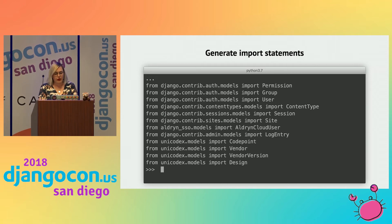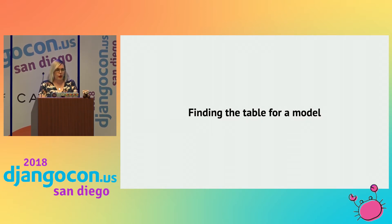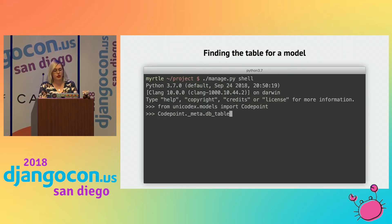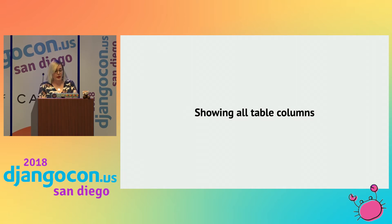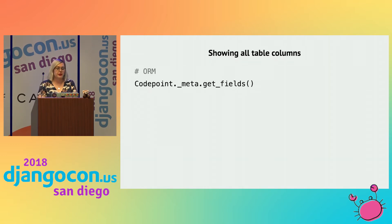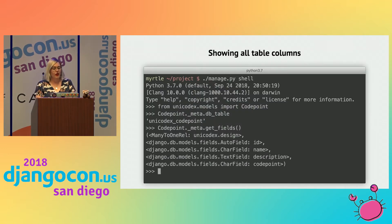We can see there's CodePoint, Vendor, VendorVersion, and Design. Because I'm interested in the database, I want to know exactly what these models map to. I can use the Django API and check for the DB table for my particular model. I first need to run `from unicodex.models import CodePoint`, and then I can ask it for the database table — in this case, unicodex_code_point. Next I'd want to see all the columns in the table. Instead of get_db_table, I can call get_fields, and I can see all the fields — there's an ID, a name, a description, and a code_point. Now I know what my database looks like.